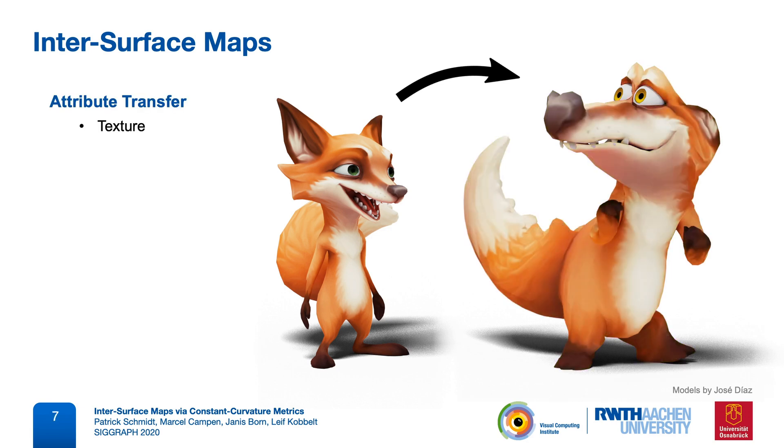In the same way, we can also map geometric detail, like a displacement map, or a surface deformation, or a surface tessellation from one model to another, or almost any other information defined on the surface.